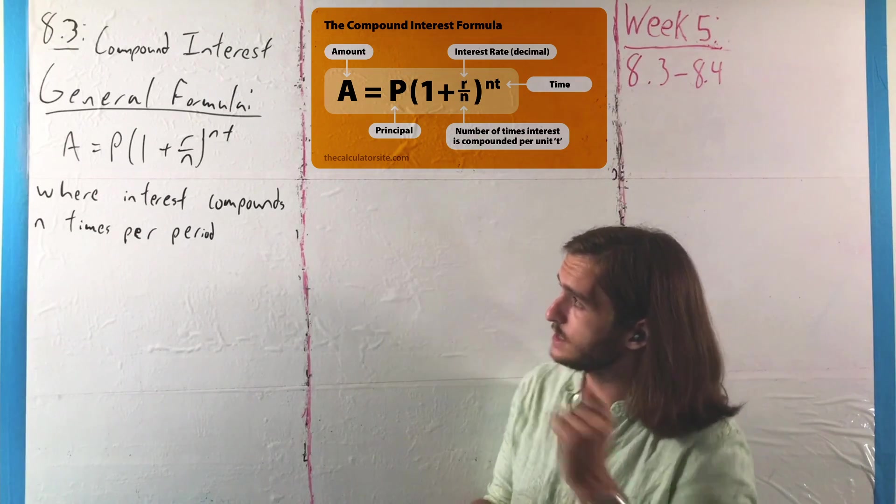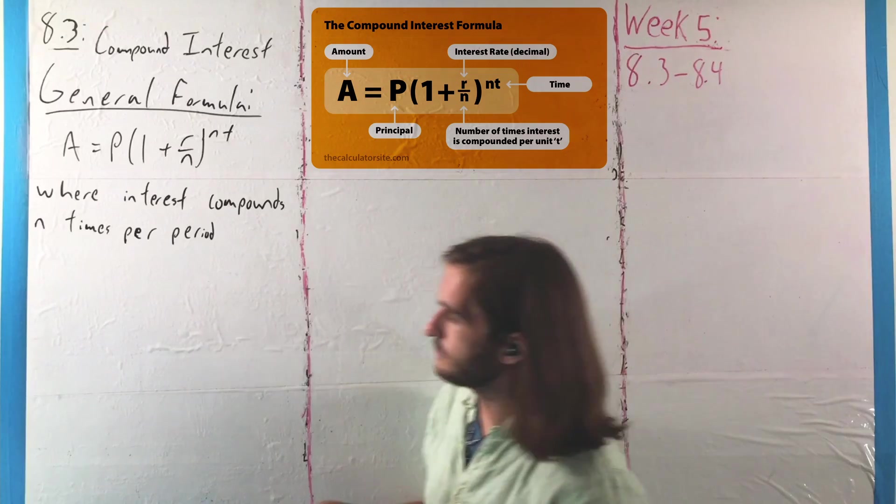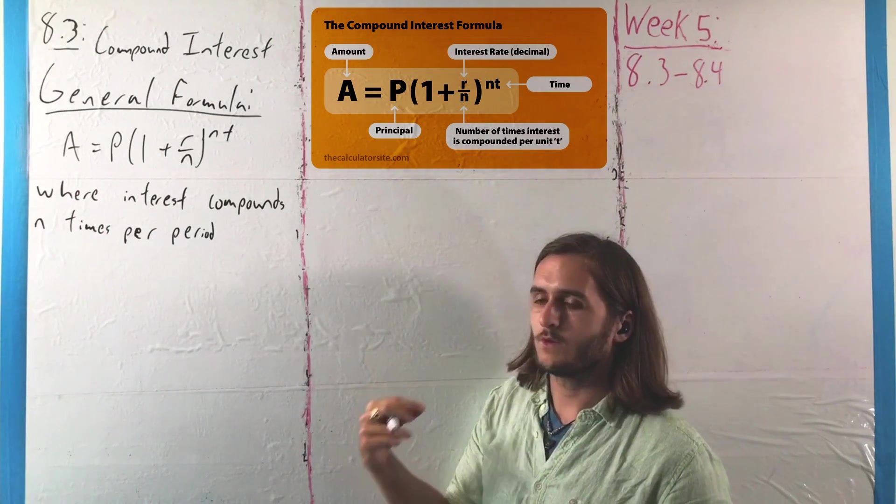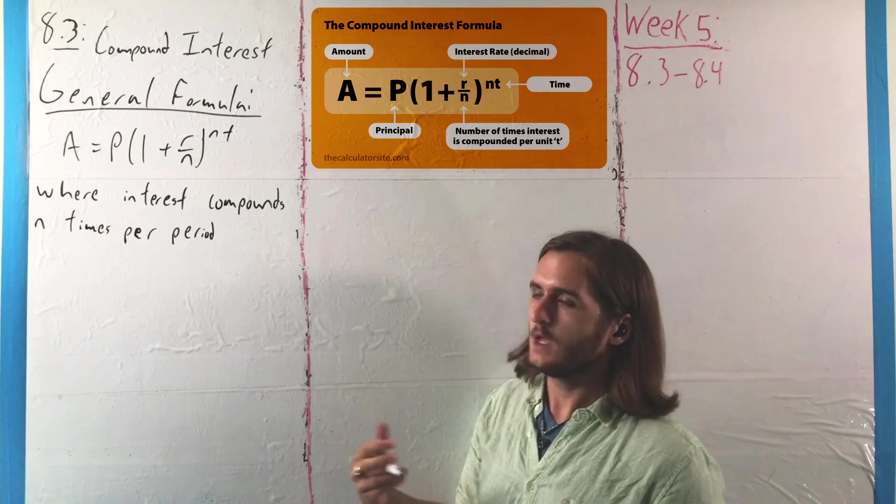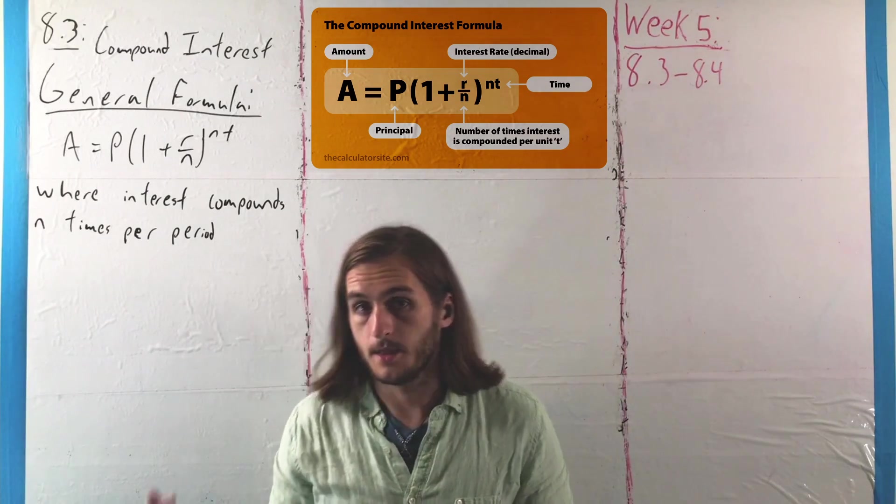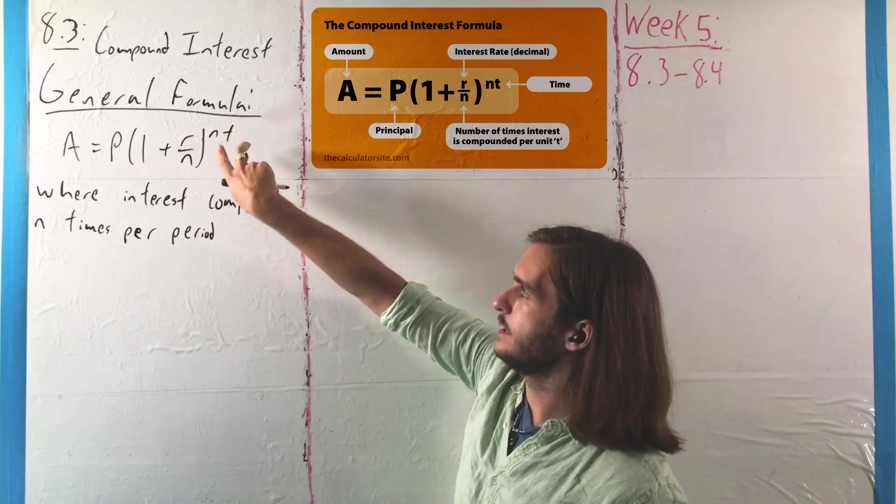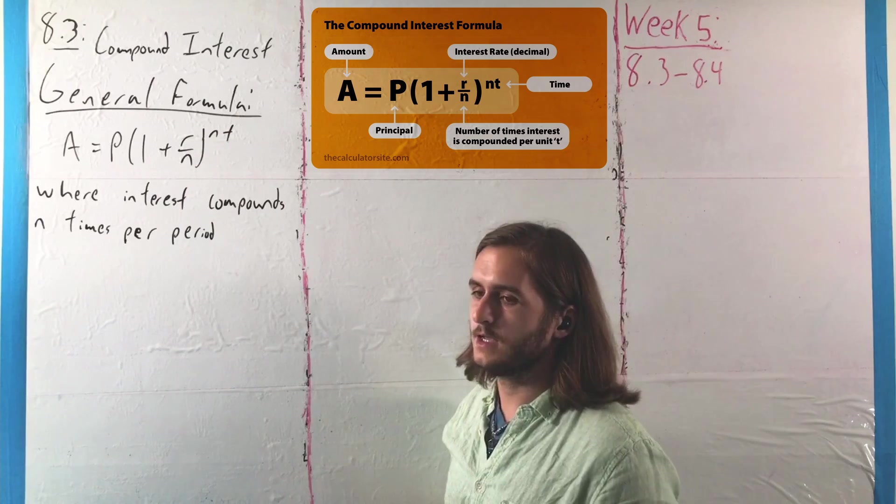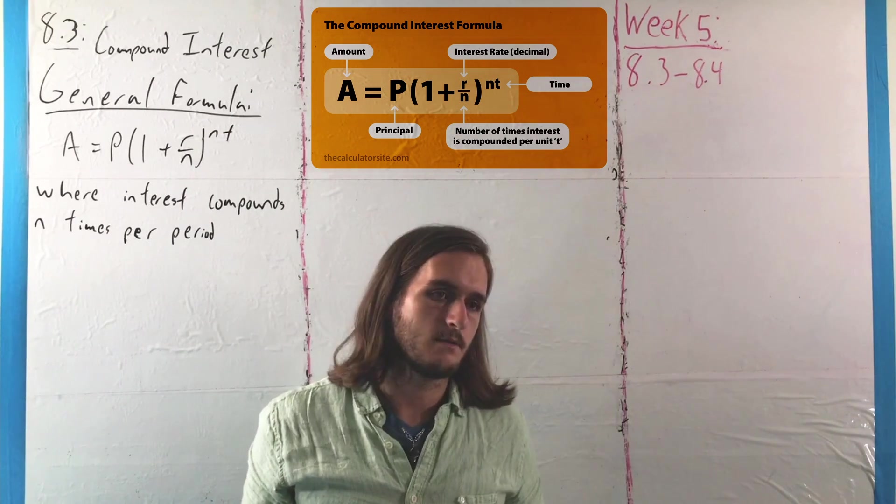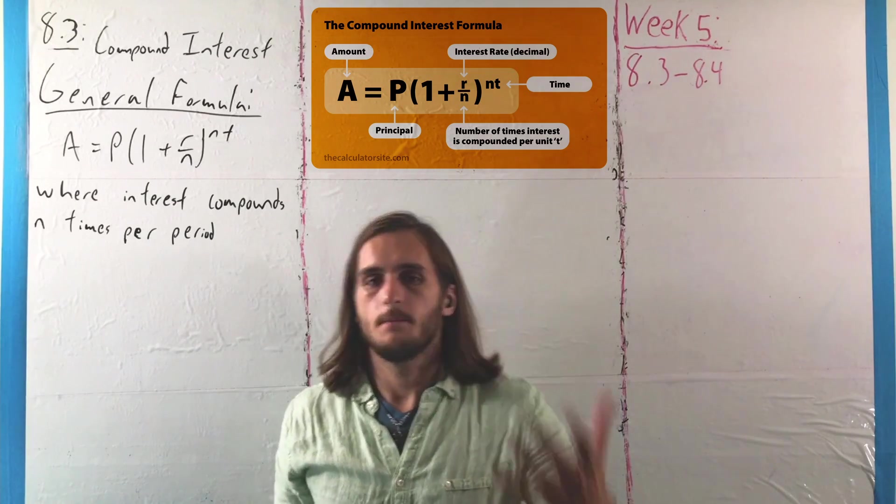But for now, the main thing I want us to see is the general formula for compounding interest, which is given by A equals P times the quantity 1 plus r over n raised to the power nt, where we can think of this formula as being an extension on the last one we saw, wherein we split that rate into n parts and make up for that by taking the value t, the number of units of time we have, and multiplying them by n times per period.